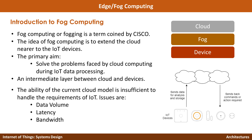The primary aim of fog computing is to solve the problems faced by cloud computing. The fog computing layer is the intermediary layer between the devices and the cloud computing platforms. Edge devices sometimes have very limited computation, but the fog layer has more computing capability, allowing us to address three key issues with the cloud computing model.